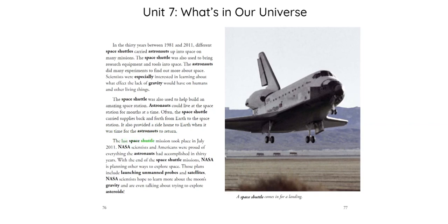The last Space Shuttle mission took place in July 2011. NASA scientists and Americans were proud of everything the astronauts had accomplished in 30 years. With the end of the Space Shuttle missions, NASA is planning other ways to explore space. Those plans include launching unmanned probes and satellites. NASA scientists hope to learn more about the Moon's gravity and are even talking about trying to explore asteroids.